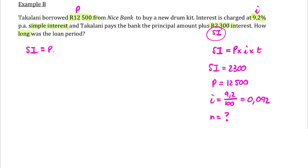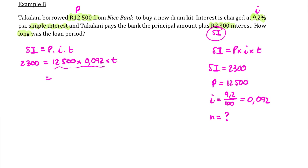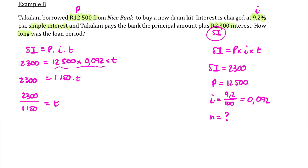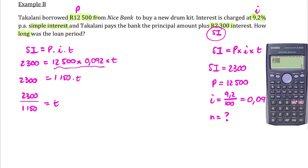We write down our SIPIT formula to make sure we don't make mistakes with our substitution. Simple interest is 2,300 rand, the principal is 12,500 rand, multiplied by the interest rate 0.092, multiplied by our time. We can divide 2,300 by 12,500 times 0.092, or we work out that this is 1,150 times the time. To get time by itself, we take 2,300 and divide it by 1,150, and the time is 2 — so the loan was for two years.